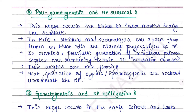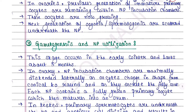Step 2 is pre-gametogenesis and NP renewal. This stage occurs for three to four months during the summer. In this stage, residual ova or spermatozoa are absent from the lumen as these cells have already been phagocytized by NP. In ovaries, previous generation immature primary oocytes remain within NP incubation chambers and are now growing. The next generation of oogonia or spermatogonia are scattered underneath the NP.